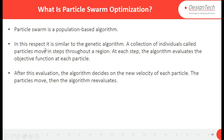Particle Swarm is a population-based algorithm. In this respect it is similar to the Genetic Algorithm — a collection of individuals called particles. It moves in steps throughout the search space; at each step the algorithm evaluates the objective function at each particle. Whichever has a minimum value moves to the next generation. After this evaluation, the algorithm decides on the new velocity of each particle.